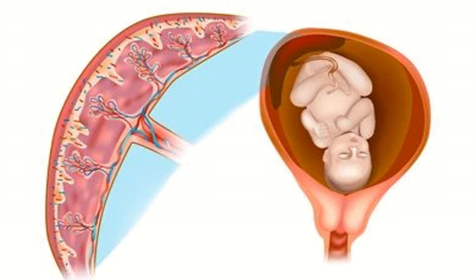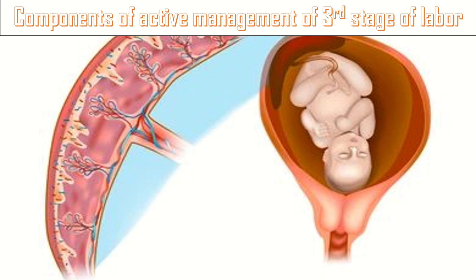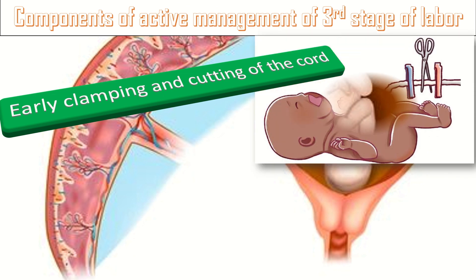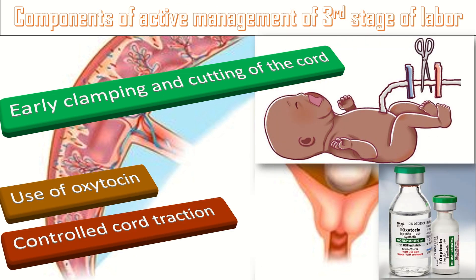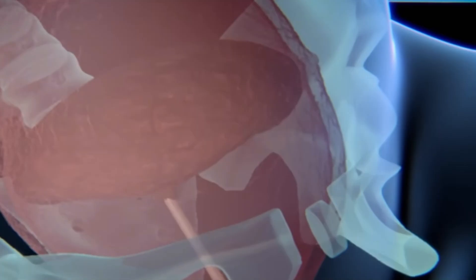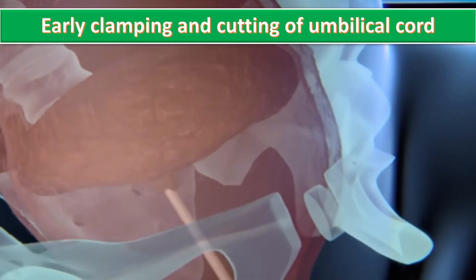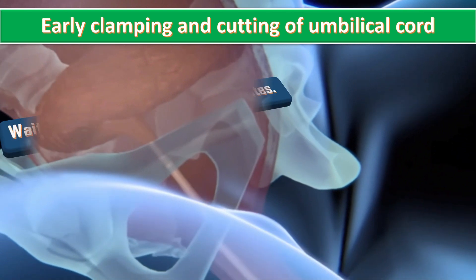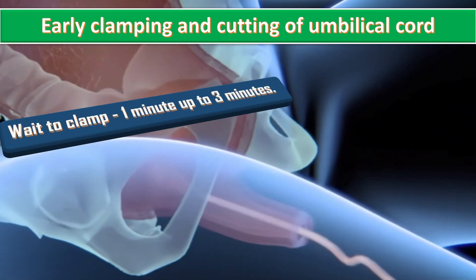The three components of active management of third stage of labor include: first, early clamping and cutting of the cord; second, use of oxytocin; and third, controlled cord traction. For early clamping and cutting of the umbilical cord, we wait to clamp from one minute up to three minutes.